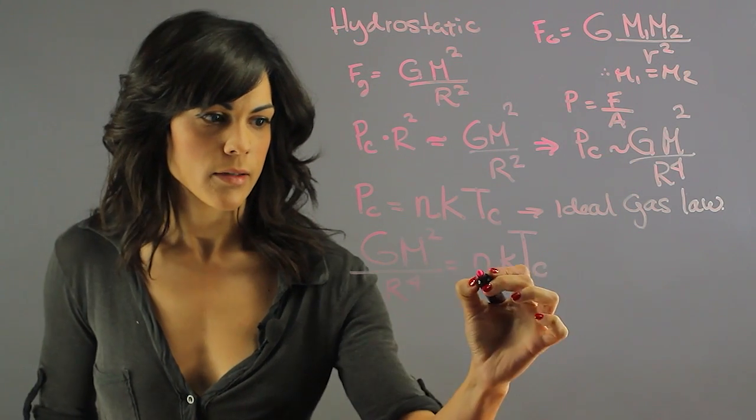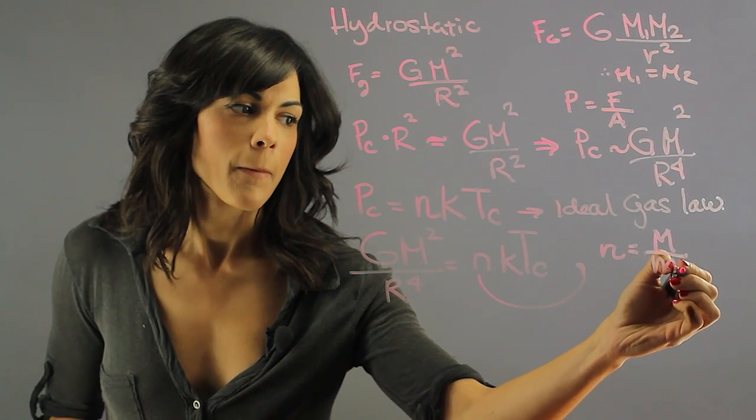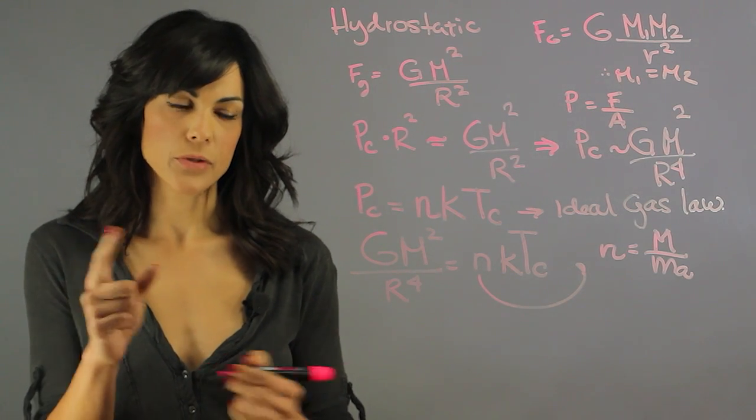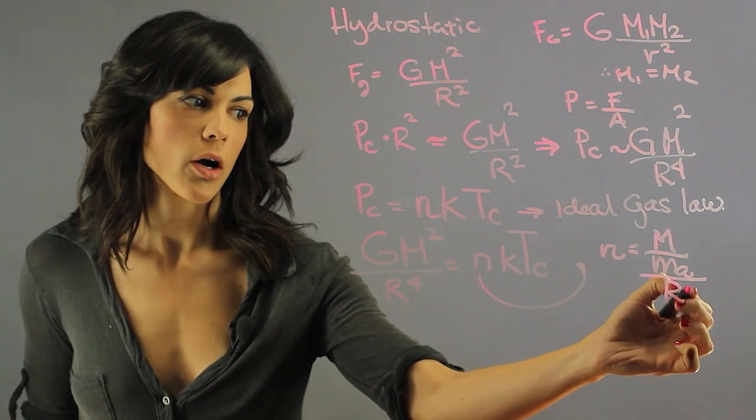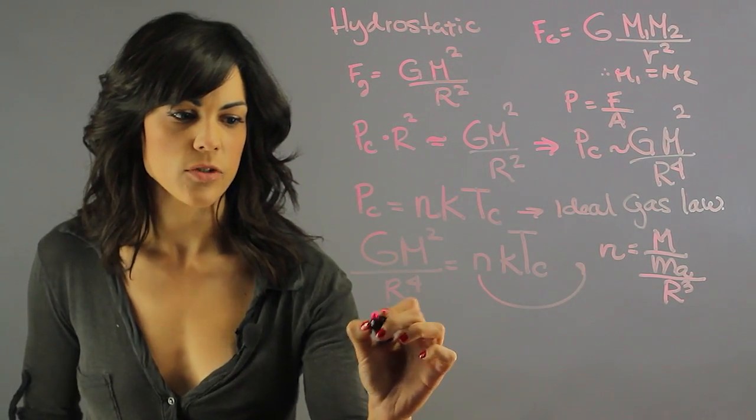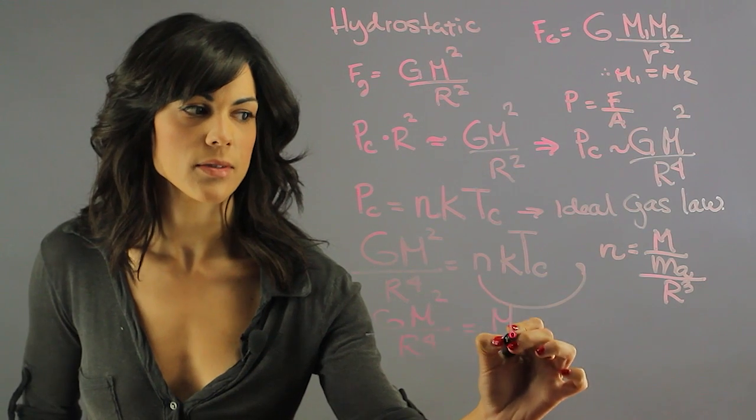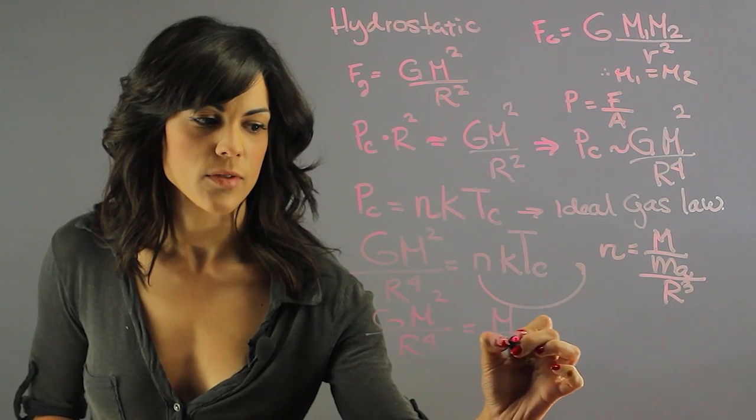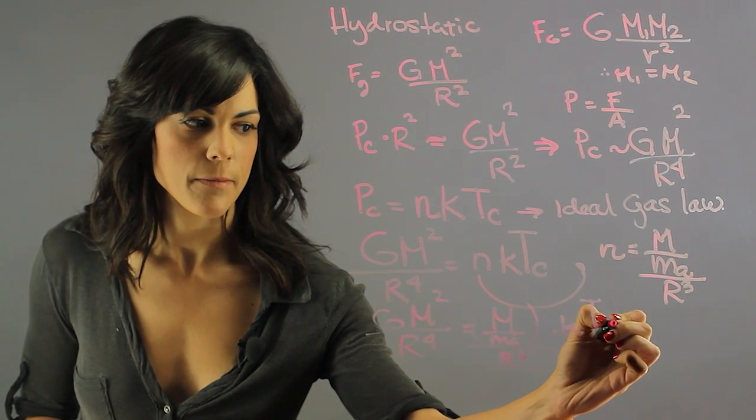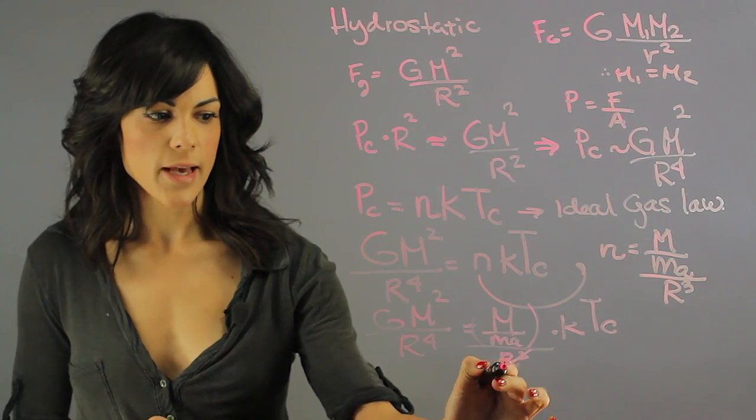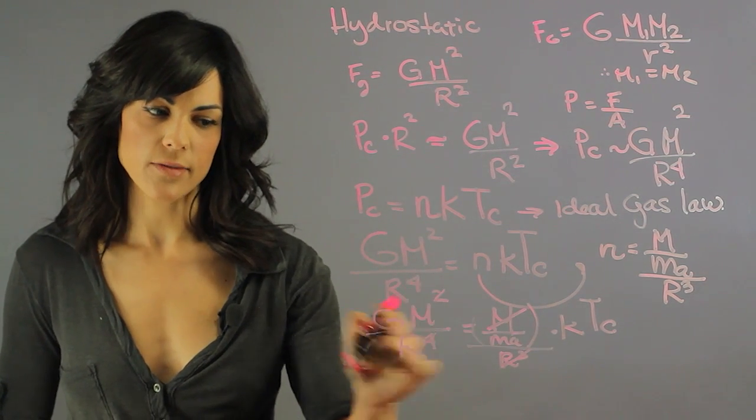Now N, this density, is the mass of the Sun divided by the typical mass of a single atom. So it is the mass of a single atom divided by the volume of the Sun r cubed. So then if we have G m square r to the fourth and here we plug in the mass of the Sun divided by the mass of a single atom divided by r cubed times k TC. R cubed cancels most of this leaving a single r on the other side. And then this mass of the Sun cancels the mass square and leaves one single m.